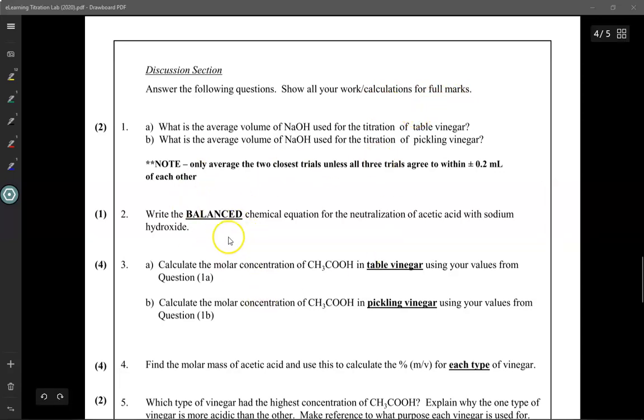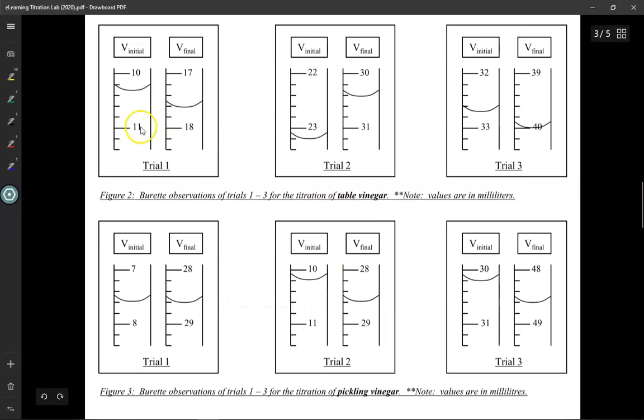The goal of this lab is to find out the molar concentration of acetic acid in table vinegar and in pickling vinegar. These are two different types of vinegar and because they have different uses they will have different concentrations of acetic acid inside. And so we did three separate trials for table vinegar.